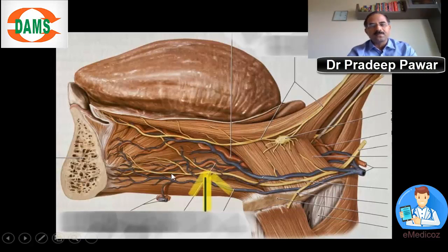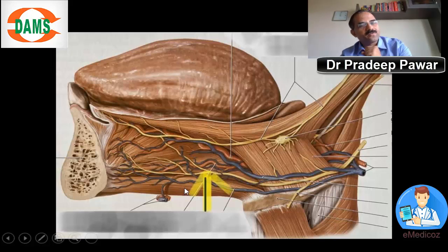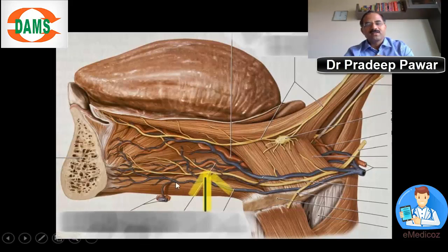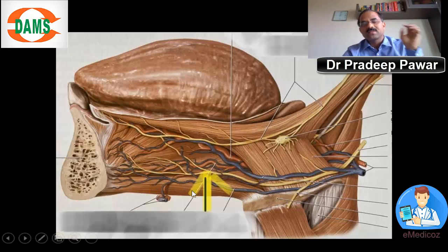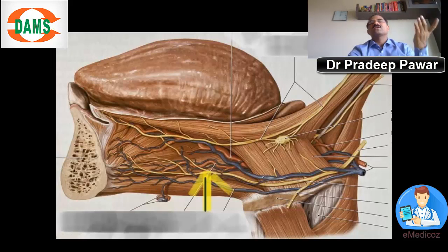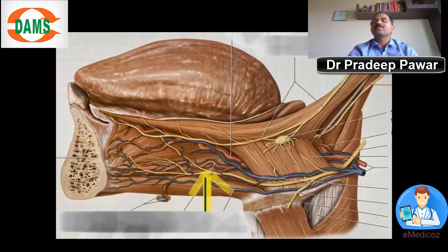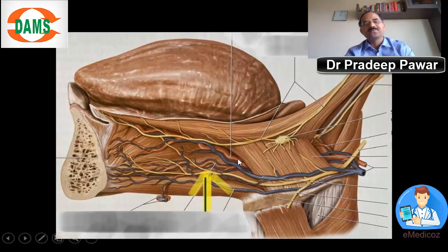Looking at this slide, this is the genioglossus and this is the geniohyoid. The nerve supply of the geniohyoid is C1. C1 supplies both the geniohyoid and the thyrohyoid. All the remaining supra- and infrahyoid muscles are supplied by the ansa cervicalis.